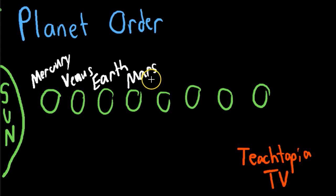After Mars, Jupiter. Then we have Saturn, followed by Uranus, followed by Neptune.